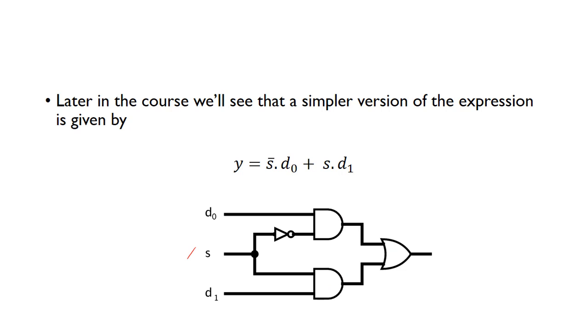When s is 1, the NOT gate produces a 0 on the top branch and we have a 1 on the bottom branch. We've got a 0 on the top AND gate input, so we get a 0 on that output. We're effectively turning off the top AND gate, and then d1 is piped to the output.